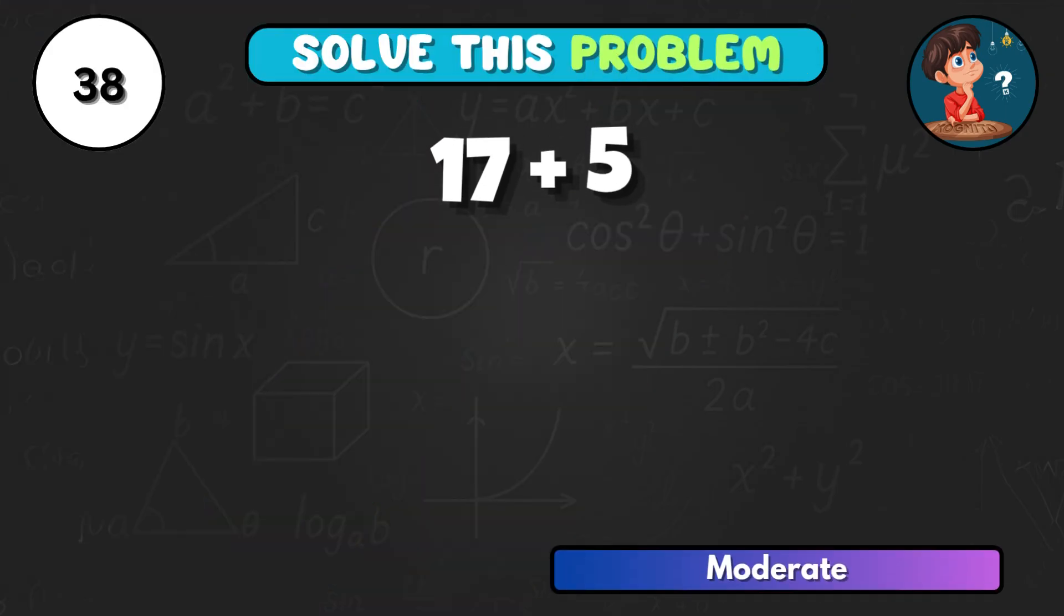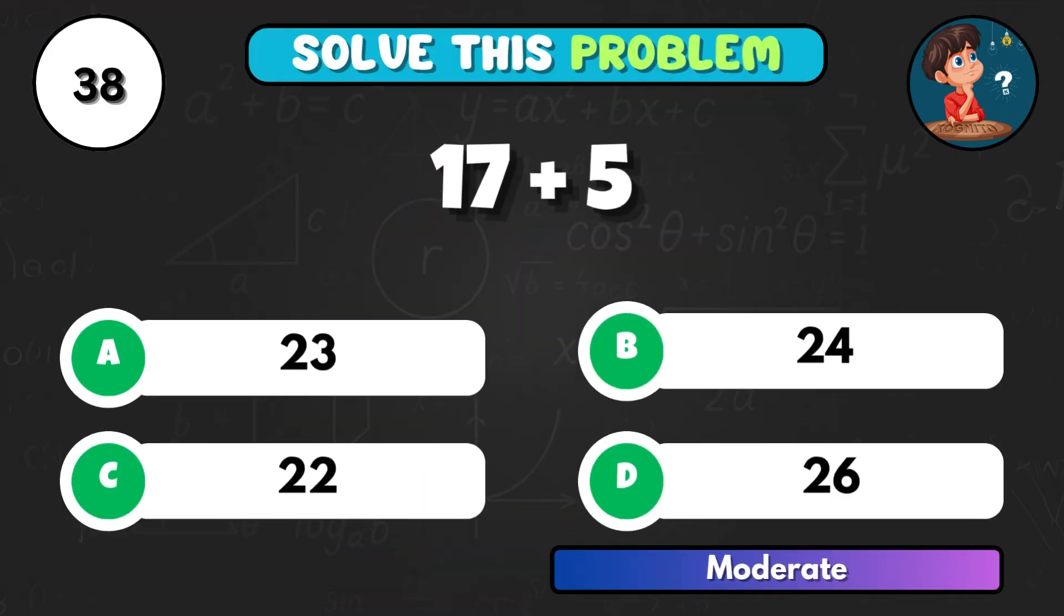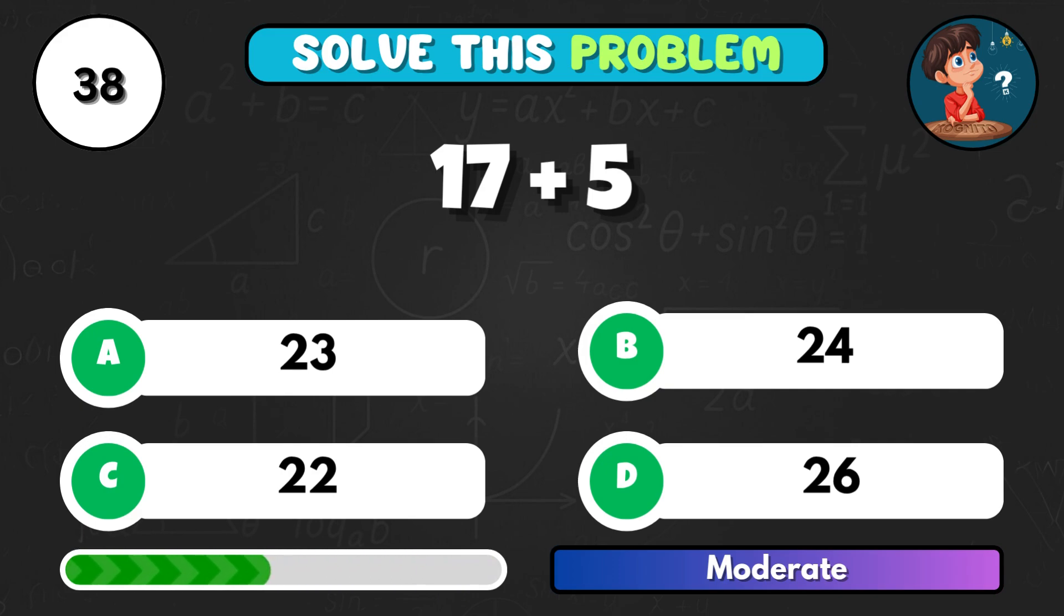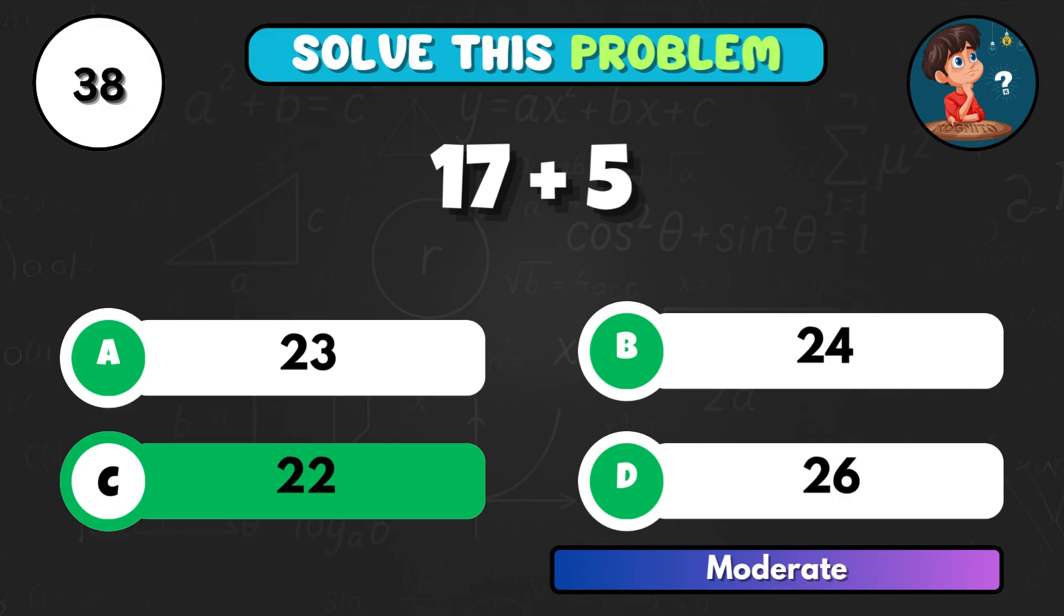17 and 5 together, add them up. Correct choice C, giving 22.